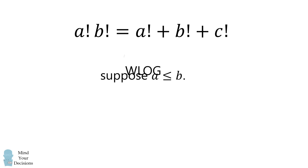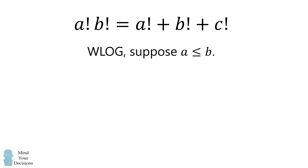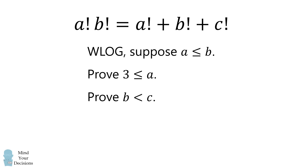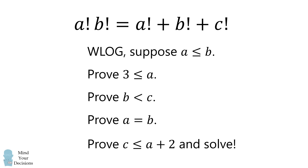The proof will proceed in the following four steps. First, we'll prove that 3 is less than or equal to a. Then we'll show that b is less than c. Then we'll prove a is equal to b, and finally, we'll prove c is less than or equal to a plus 2 and solve for the numerical answer.